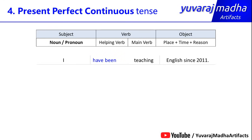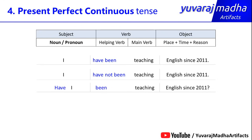Example sentences: 'I have been teaching English since 2011.' Or: 'I have been teaching English for 7 years.' For negative: 'I have not been teaching English since 2011.' For interrogative: 'Have I been teaching English since 2011?' For negative interrogative: 'Haven't I been teaching English since 2011?'